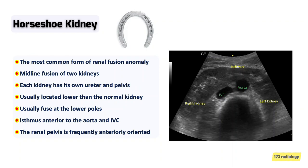The horseshoe kidney is the most common form of renal fusion anomaly. It occurs in one out of every 400 people. In the horseshoe kidney, there is a midline fusion of the two kidneys, with each kidney having its own ureter and pelvis. A horseshoe kidney is ectopic.